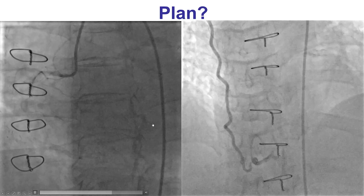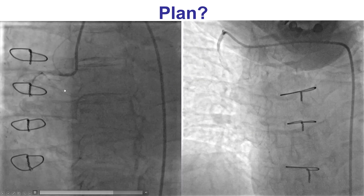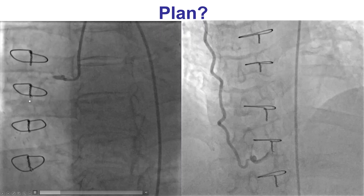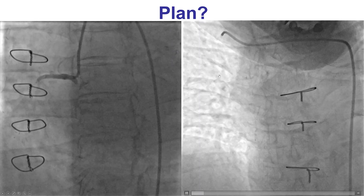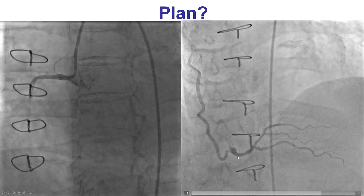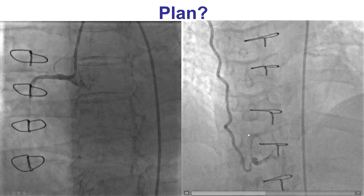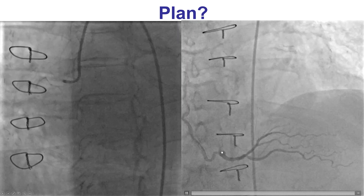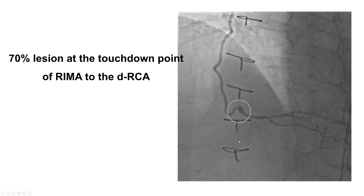The culprit appears to be the RIMA touchdown, and the patient also has a significant lesion in the native right coronary artery. If this were a saphenous vein graft instead of a RIMA, opening the native would clearly be the better approach. However, RIMA grafts have excellent patency, so our thought was that recanalizing that lesion would give good results — that was therefore our target lesion.